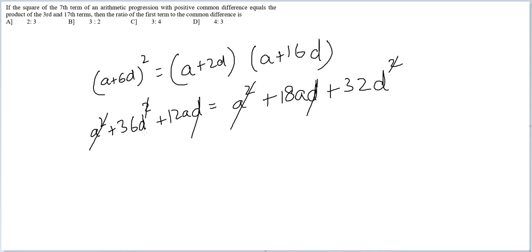Then let's get A on one side and D on one side. So I get 4D equals 6A, or A by D is equal to 2 by 3.